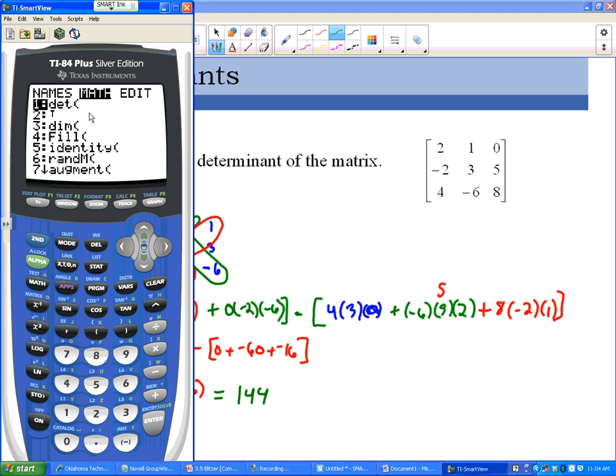DET means determinant, so I'm gonna press enter because that's what I want to do. I have to tell the calculator what matrix I want to do the determinant of, so I'm gonna do second x inverse to get to the matrix menu and then I'm gonna put in the name of my matrix which is A by pressing enter. I can close the parentheses there, I don't really have to, and I press enter and I get 144, which is what we got on that problem. So that's how you find the determinant on the calculator.